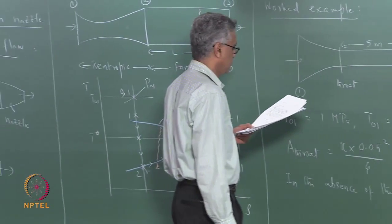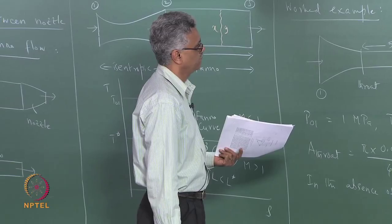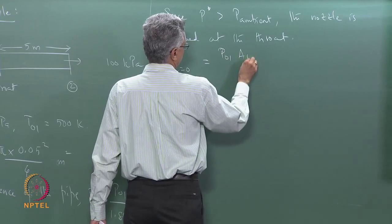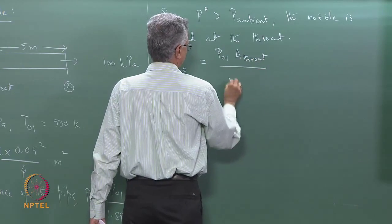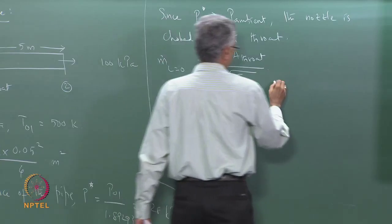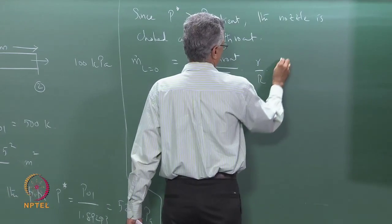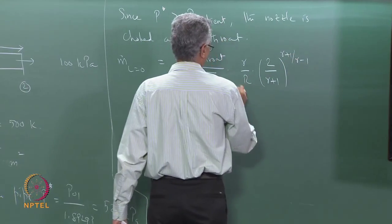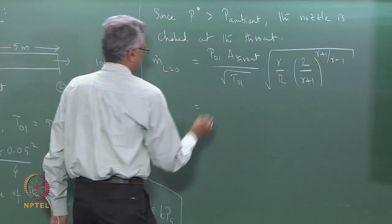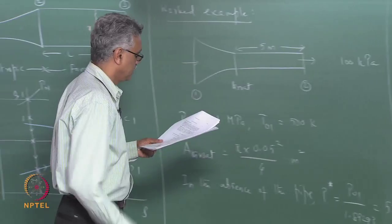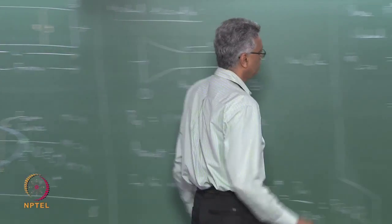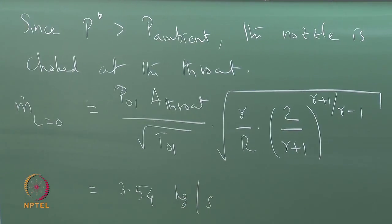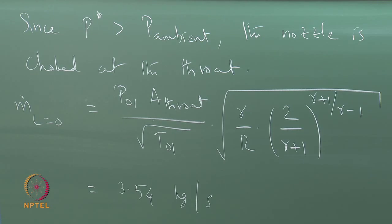The choked mass flow rate formula gives: ṁ = P01 · A_throat / √T01 · √(γ/R) · (2/(γ+1))^((γ+1)/(2(γ-1))). Substituting the values with γ = 1.4, this comes out to be 3.54 kg/s when the pipe is absent.